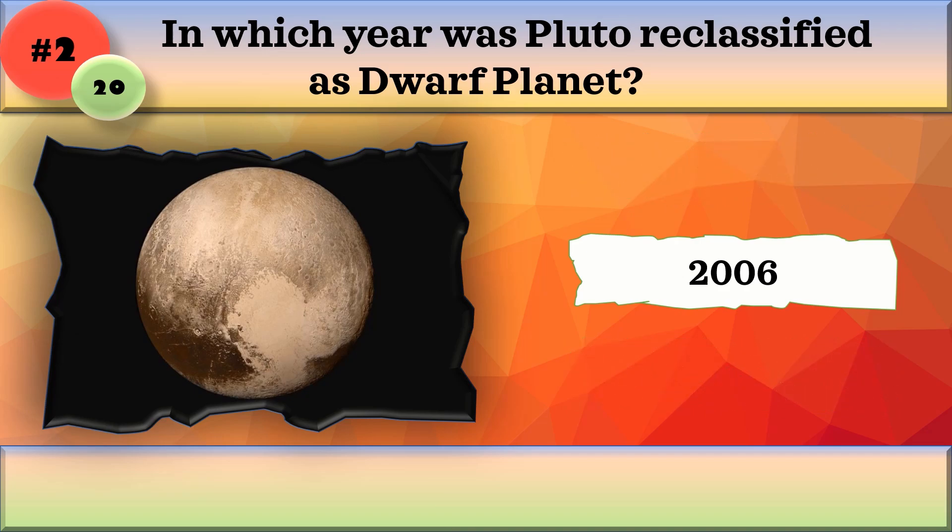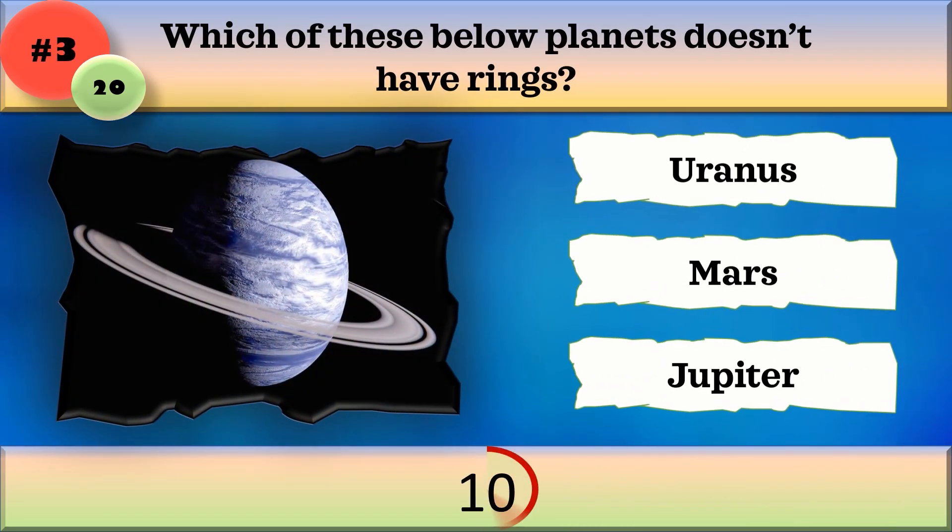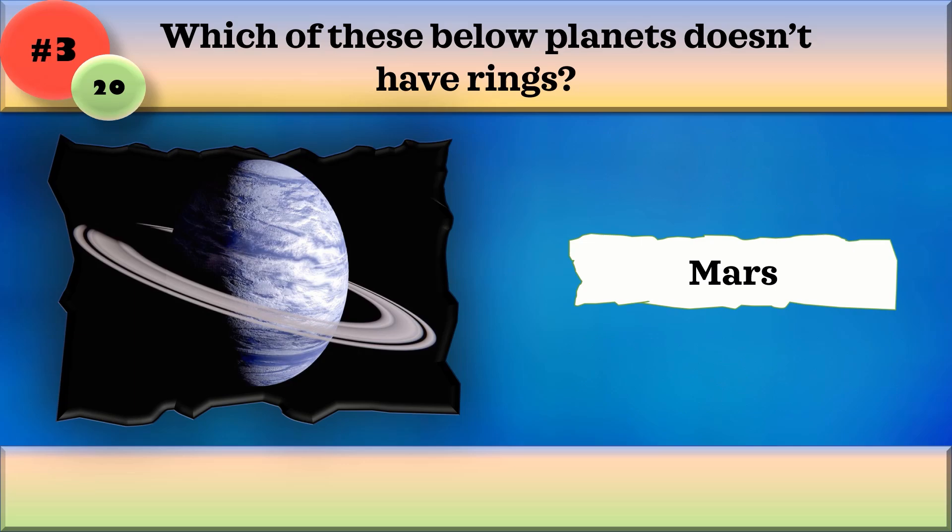Which of these below planets does not have rings? Uranus, Mars, or Jupiter? The correct answer is Mars.